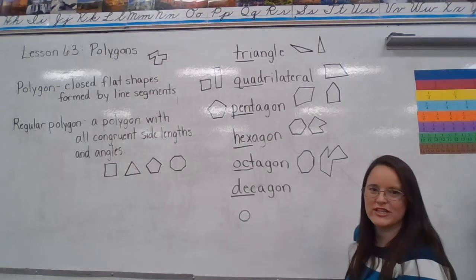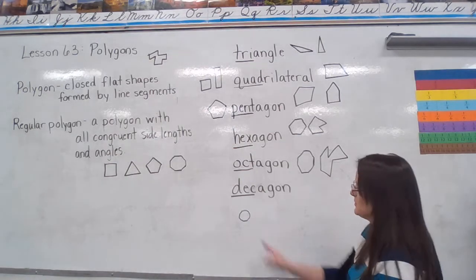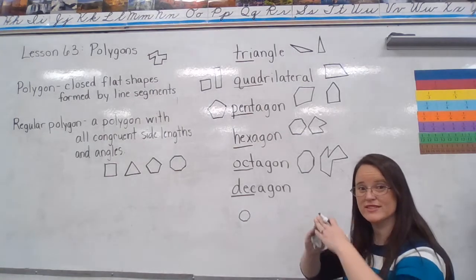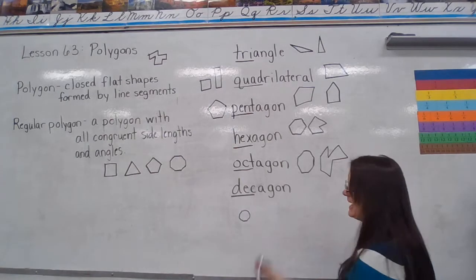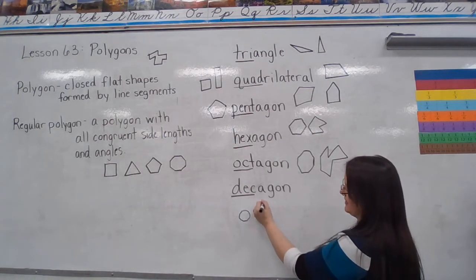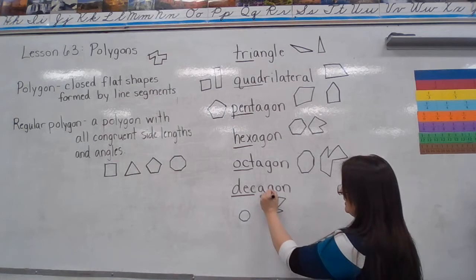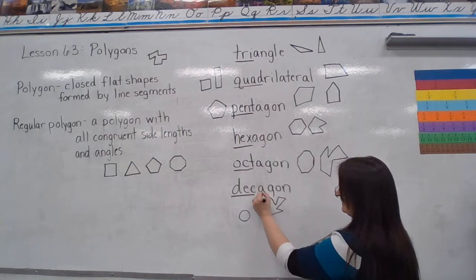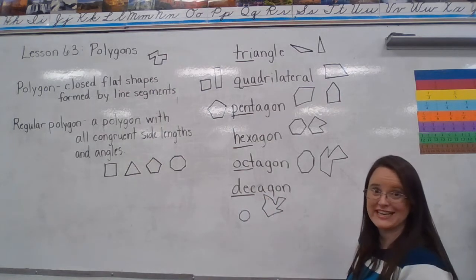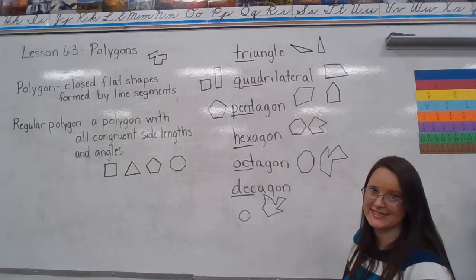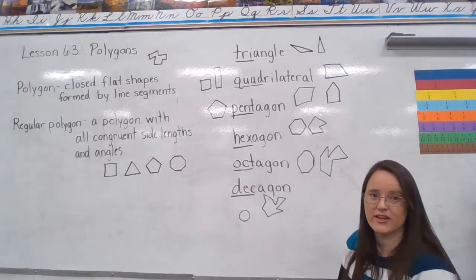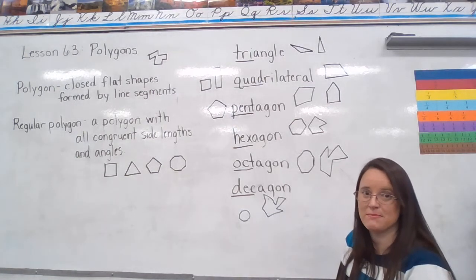It gets to be more and more looking like a circle the more sides you have, but really these are just obtuse angles — really big angles — so it makes it look a little more circular. But it has ten sides. Any closed, flat shape formed by line segments, and we have different words depending on how many line segments we use to make those shapes.